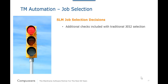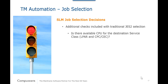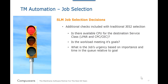Once a job has bubbled to the top, it may still not be eligible to run. Throughput Manager augments the standard JES2 job selection criteria with several additional checks: Is there available CPU on the LPAR or the CPC for the job's service class? How is the job's service class performing — is it meeting its goal? Can the job run on the system that is currently selecting work? Are there any unmet Throughput Manager limitations on this job? If any of these additional checks fail, the job is passed by and the next job in the queue gets a chance.